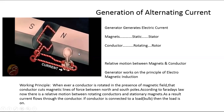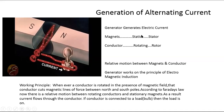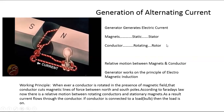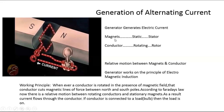Faraday's law of electromagnetic induction explains how to generate AC current. Faraday introduced this process to the world — you may have studied it from 9th to 10th class but here we see the practical explanation. A generator is the machine which generates AC current. To generate AC current, according to Faraday, we require magnets and a conductor.